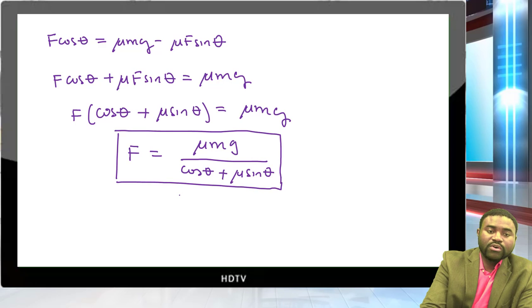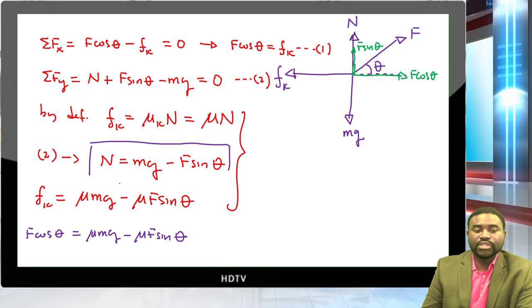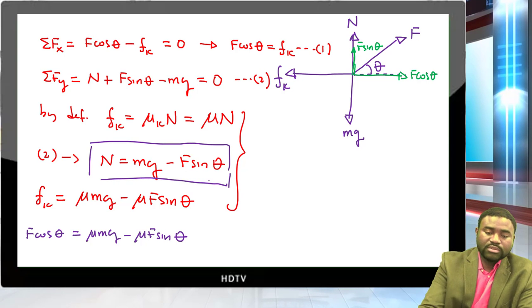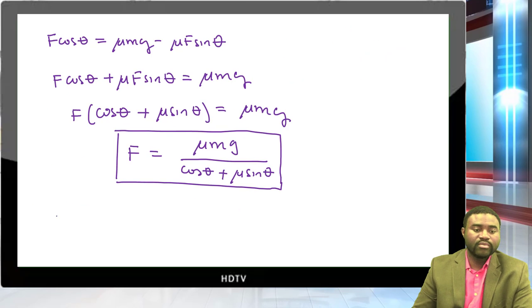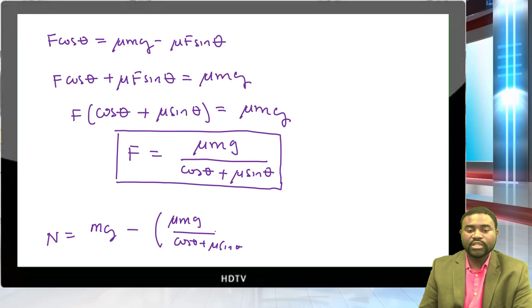Now find N. We have N equals mg minus F sine theta. Substituting F: N equals mg minus [mu*mg / (cosine theta plus mu*sine theta)] * sine theta.